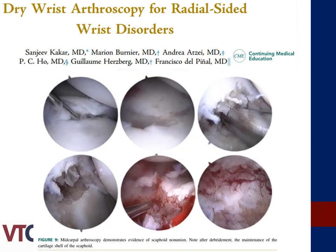Now we will discuss the ability of arthroscopy to assist with scaphoid fracture management. The images depicted demonstrate a scaphoid nonunion, followed by nonunion debridement and maintenance of the cartilage shell of the scaphoid. Wrist arthroscopy provides an unparalleled view of the fracture without associated soft tissue stripping or potential devascularization that can occur with open surgery. Arthroscopy also allows for evaluation of the injury, status of the union, assessment of the reduction, and evaluation of associated cartilage and intercarpal ligaments.